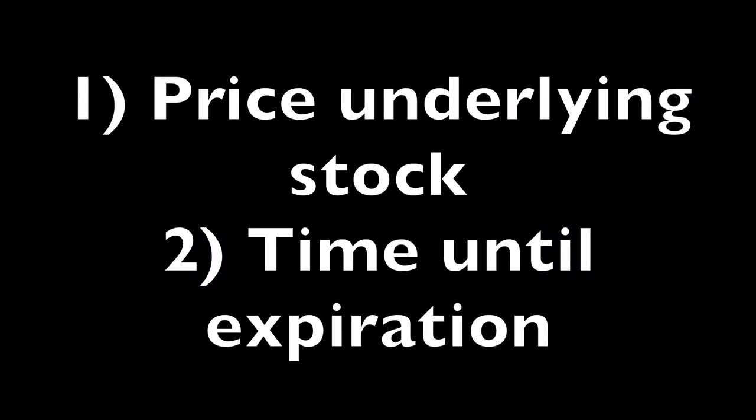You learned that time decay will slowly eat away at the value of an option until it reaches the expiration day. You also learned about intrinsic and extrinsic value. Intrinsic value is simply the amount that an option is in the money. Extrinsic value is the remaining value of the option. So an option's total value is made up of intrinsic and extrinsic value. If the option is not in the money, then it's only made up of extrinsic value. On the expiration day, an option will only be worth how much it is in the money because all the extrinsic value will be gone. Next, we're going to talk about the third factor that influences the value of an option — volatility.